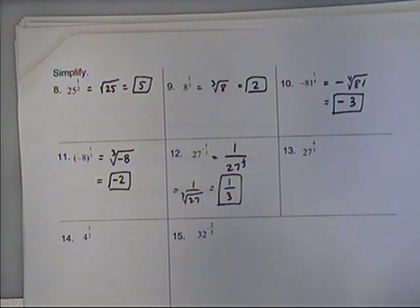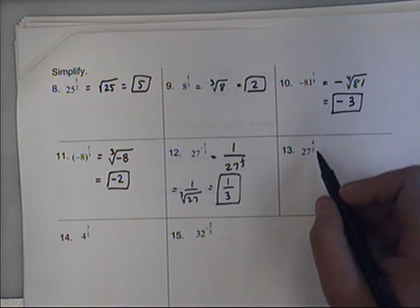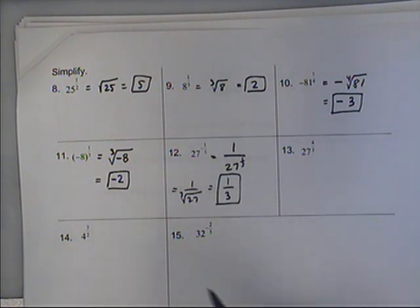The last ones are the hardest ones. We have 27 to the 4 thirds, 4 to the 3 halves, and 32 to the negative 2 fifths, which will be on the other video.